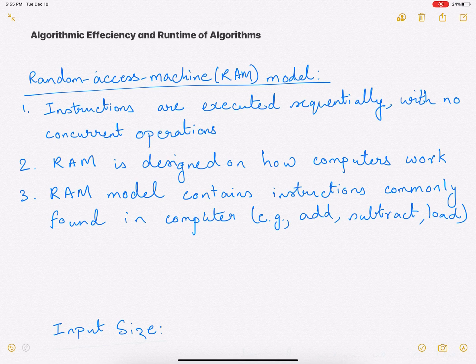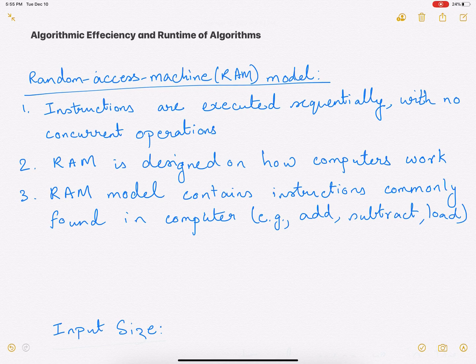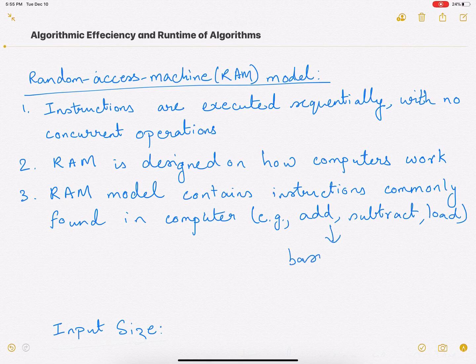To compute the runtime of an algorithm or a piece of code, we have to first define our model. The model that is popularly used is called the Random Access Machine model, or RAM model. In this model we assume that instructions are executed sequentially — one after the other — and no concurrent operations are allowed. The RAM model is essentially designed on how computers work, and commonly occurring instructions such as add, subtract, and load are considered the most basic operations.